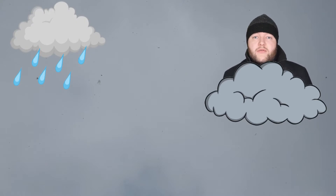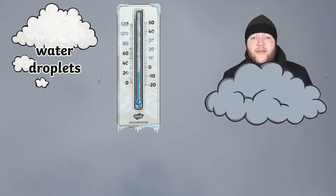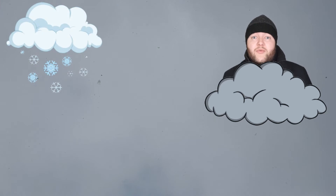But what about when it snows? Well, when it snows, before the water droplets can fall as rain, they freeze. And when water freezes, it becomes ice. Now, obviously, we know this better as snow. A little bit later, we'll look at snowflakes — the little bits of ice that make up snow.